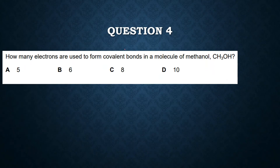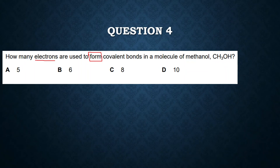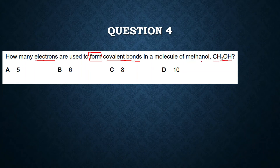Question number four: how many electrons are used to form covalent bonds in a molecule of methanol, CH₃OH? For these types of questions, they are asking about those particular electrons involved in making covalent bonds — not the total number of electrons.